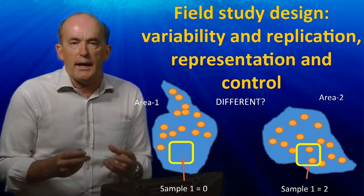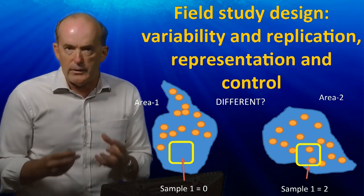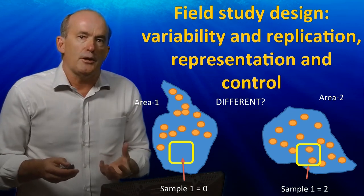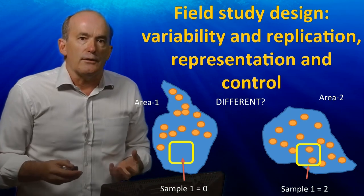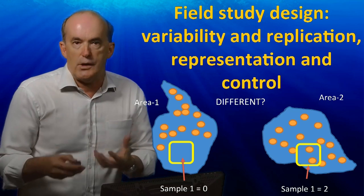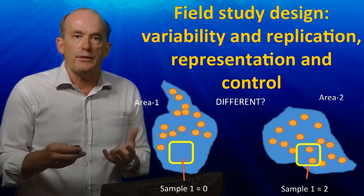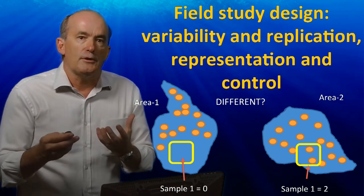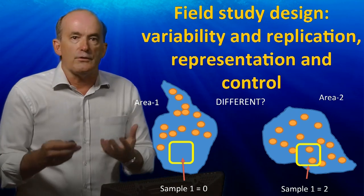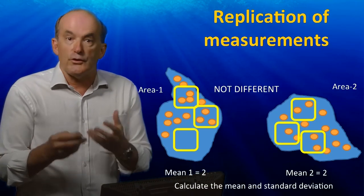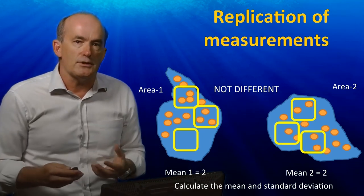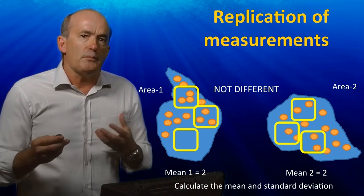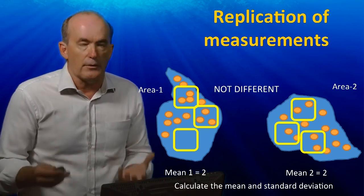Replication and consideration of control areas are very important parts of an effective study. Replication of measurements is extremely important. For example, if one had an experimental design which had a single measurement in each of two areas, one might come to the conclusion that there was a difference when there actually wasn't. The problem is that you have not included the variability between studies that is often independent of whether or not there is a difference between two areas. The solution is to include replication of your measurements within each area. By calculating the mean and standard deviation — essentially a measure of the variability between studies — you are able to better understand whether or not there is a real difference between two areas.